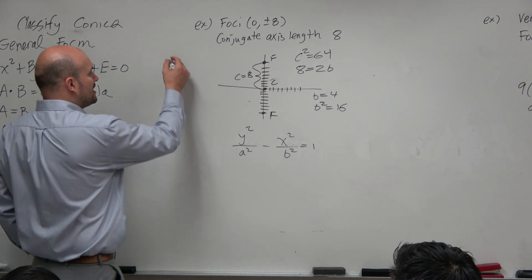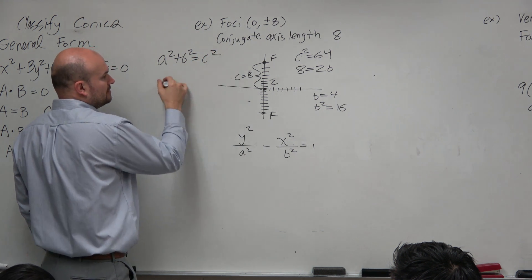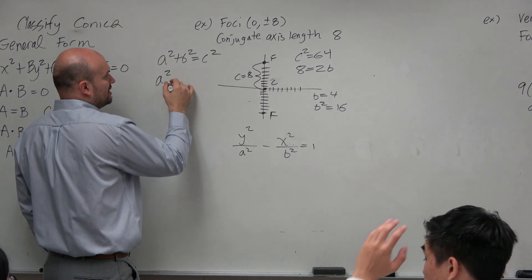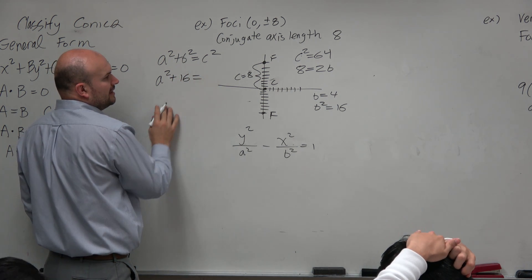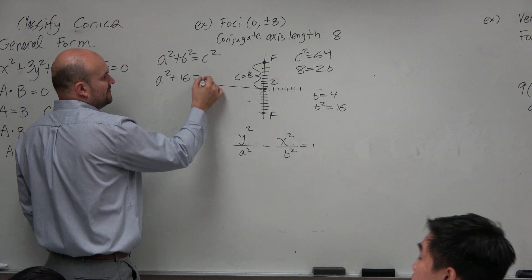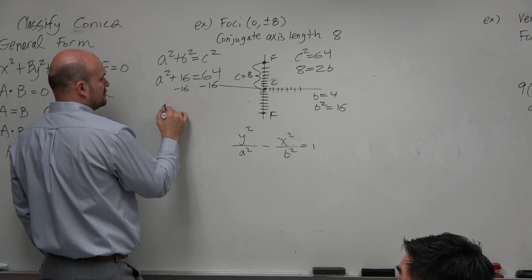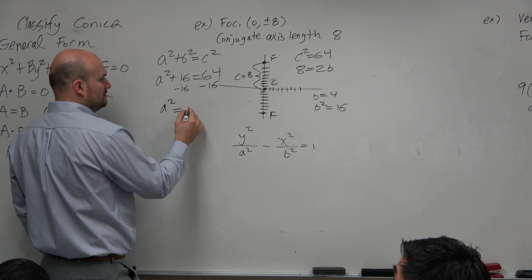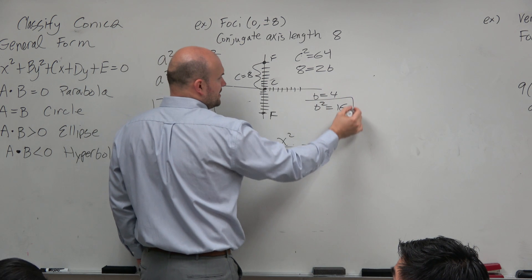Now to identify what is going to be a, I need to write back my equation. a squared plus b squared equals c squared. I still don't know a squared, but I know that b squared, it's really kind of getting annoying. And then c squared is going to equal 64. So I subtract, subtract. a squared is going to equal 48. So now I know a squared, and I know b squared.